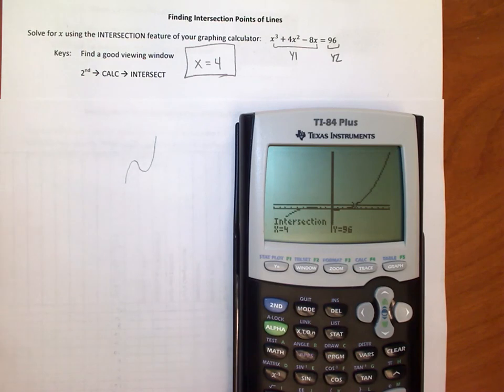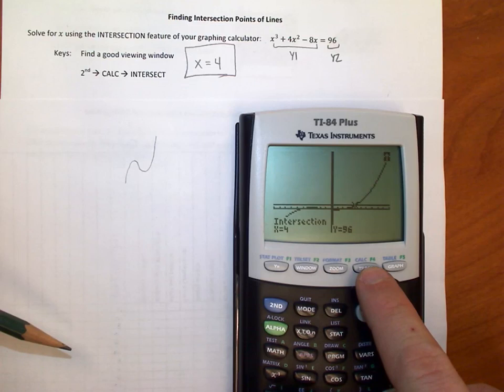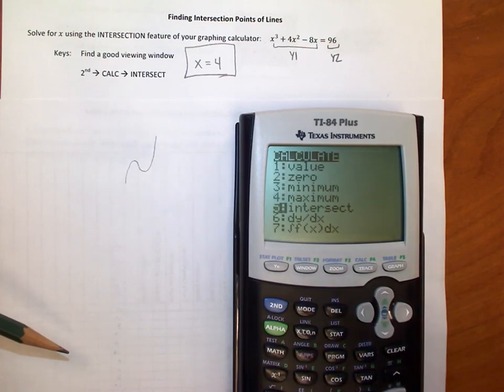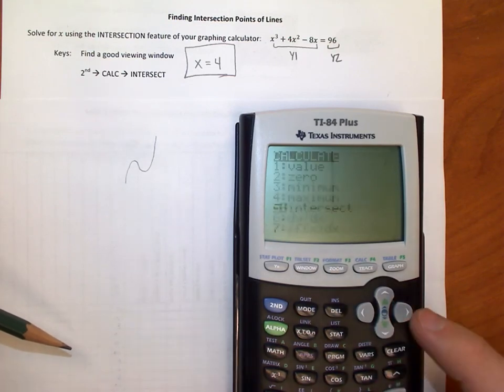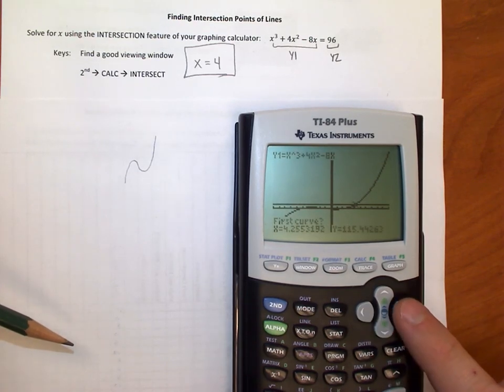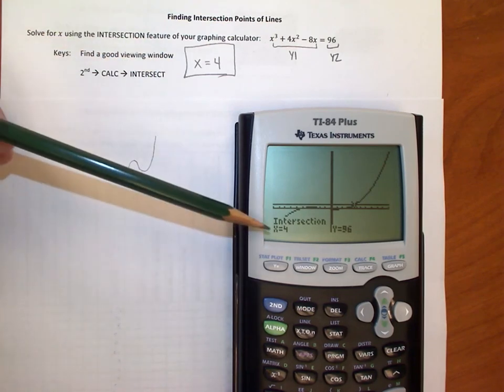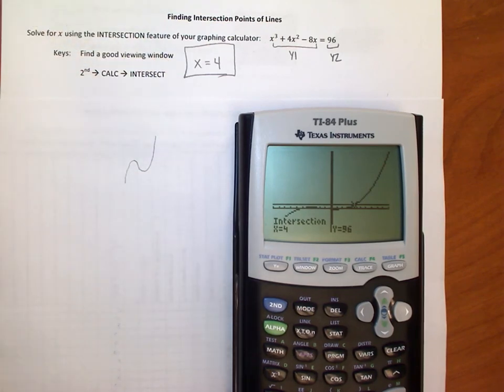And the great thing about this is this is going to help us solve some word problems and other things here in just a minute. If we can find where two lines cross by using the intersect feature. Remember, second, calc, option five, scroll over in the neighborhood of where the intersection happens and hit enter, enter, enter. And the x coordinate is what we're interested in. If you can remember that, hey, that's huge. We can solve any problem for x from here on out for the rest of the year.